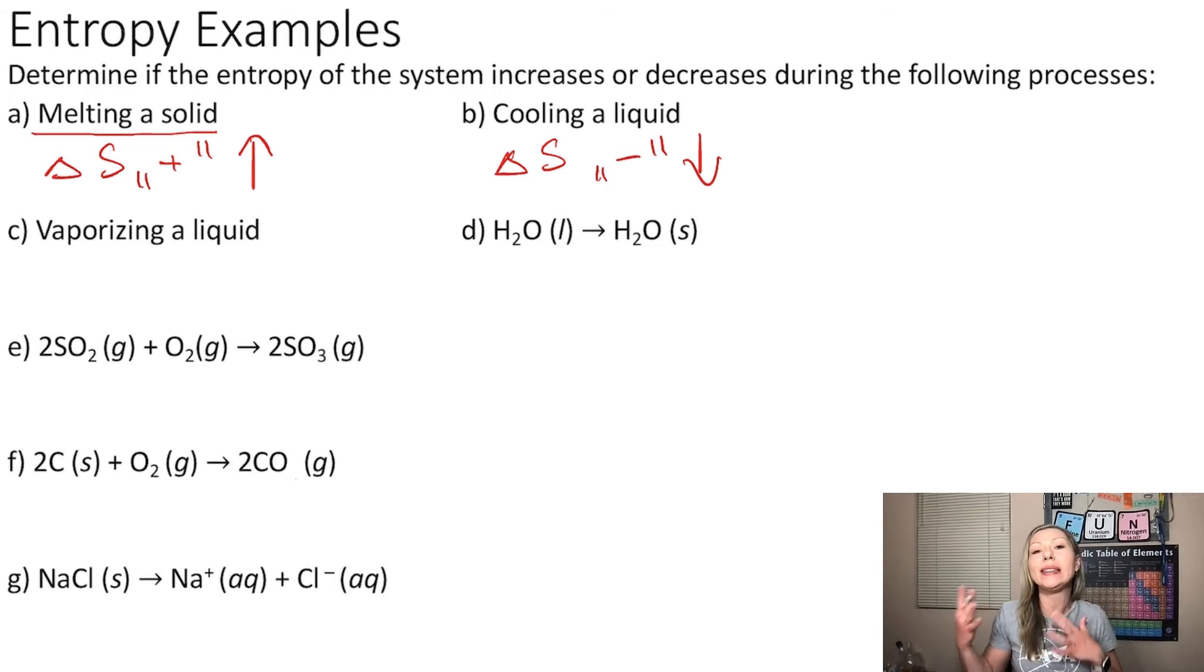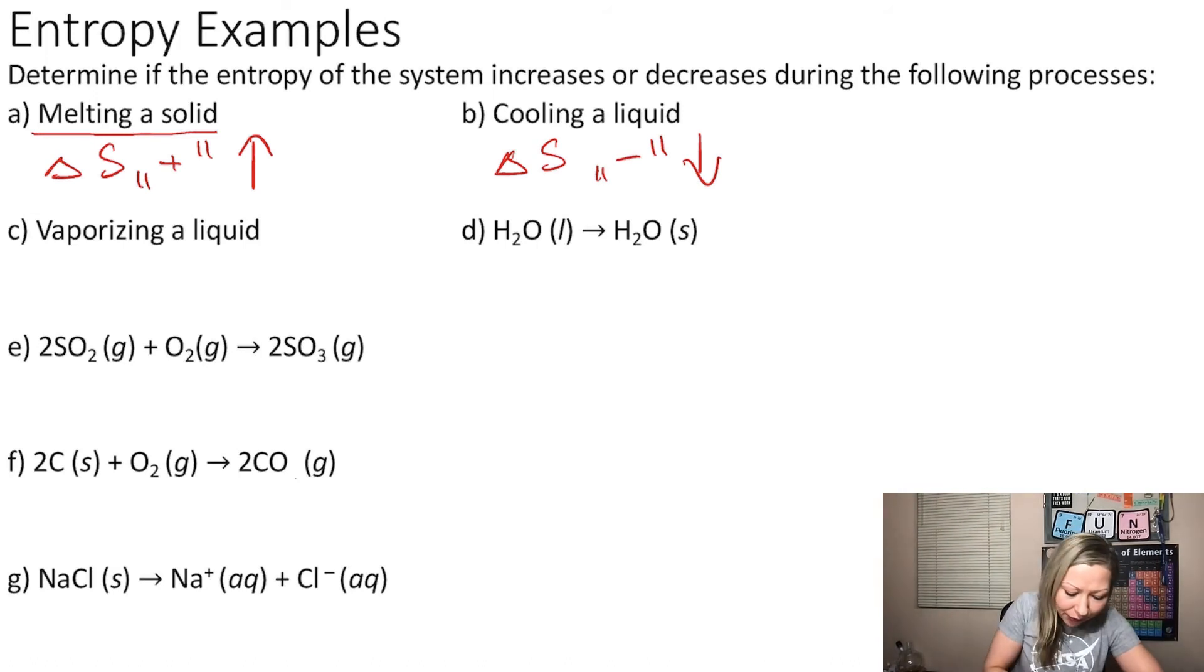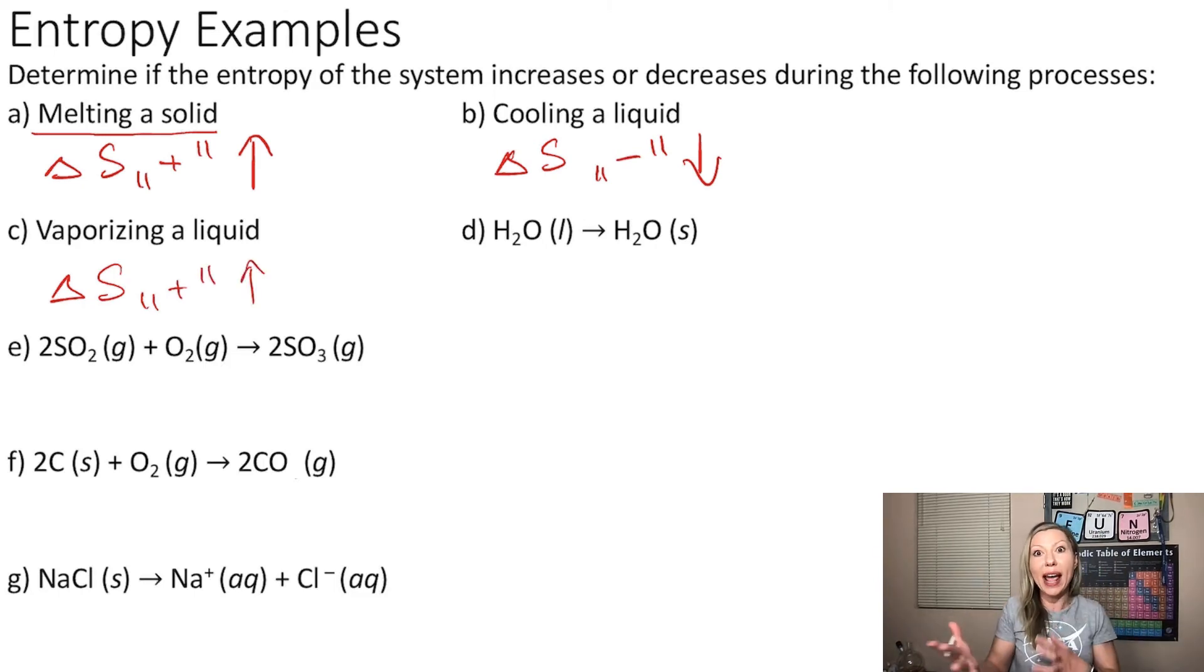How about vaporizing a liquid? Well, in that case, we have a liquid where the molecules can pass each other, but we are going into the gas phase where the molecules are really, really far away. So that will definitely increase the randomness of our system, creating a positive change in entropy. Remember that the change in entropy equals the entropy of the final minus the entropy of the initial state. So if in the final state you have more randomness, you are going to end up with a positive change in entropy.